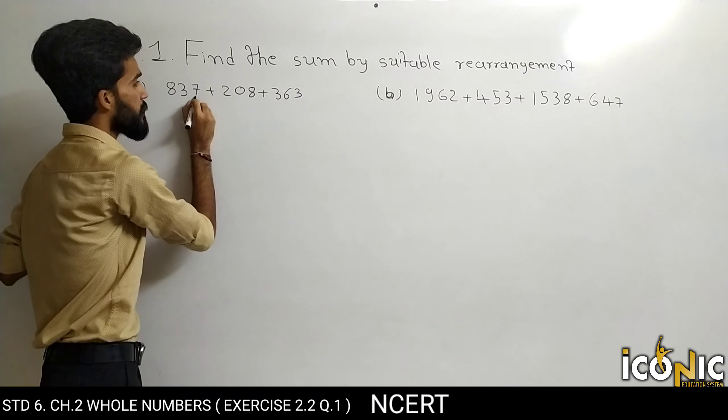0 plus 0 is 0, 2 plus 2 is 4. Toh answer mila 1400. Toh humne kya kiya ki jo bhi number ke peeche 0 aaya, us tarah se rearrangement kiya aur uska addition kiya. Isko baad mein rakha, last mein dono ka addition kar liya. Agar direct aata hai toh ese bhi kar sakte hain, warna normal tarike se bhi kar sakte hain. Chalo second example mein jaate hain.